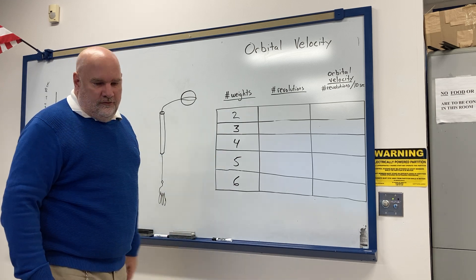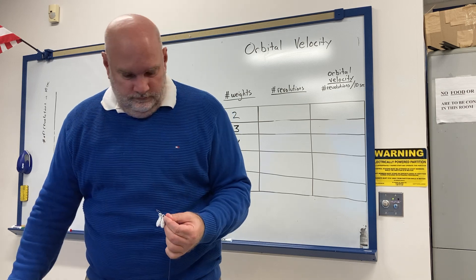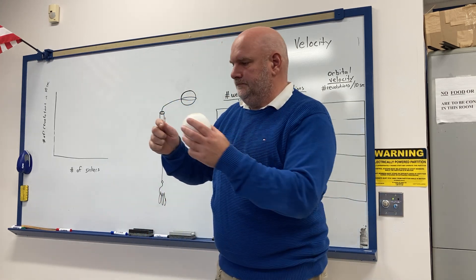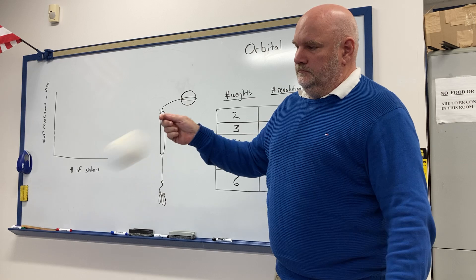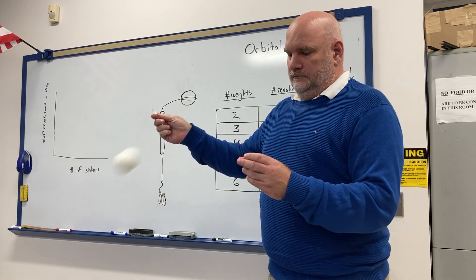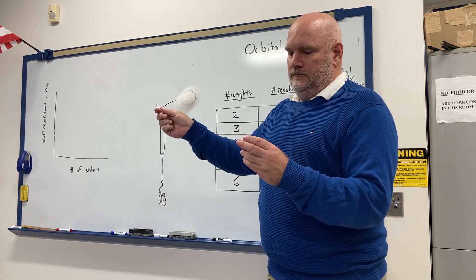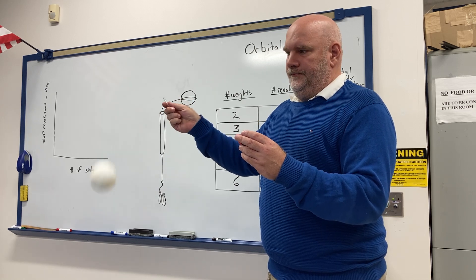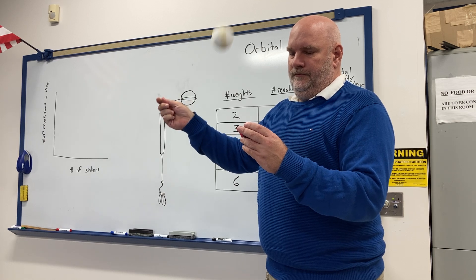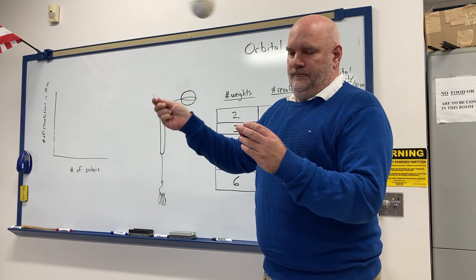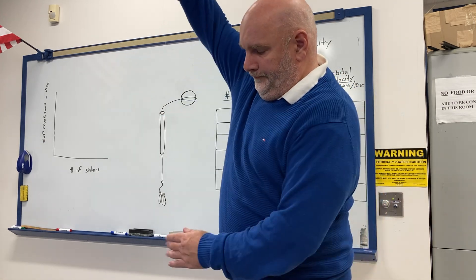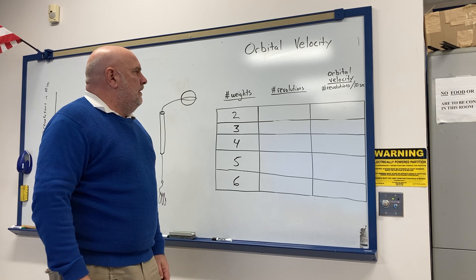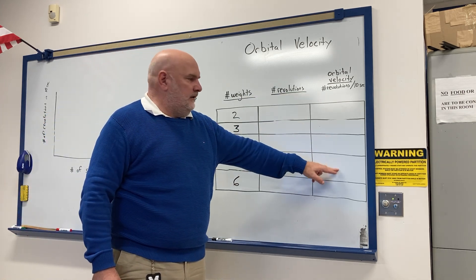Now I'm going to do it with five sinkers. However many times you counted, put that as the number of revolutions, and then that number divided by 10 is the orbital velocity.